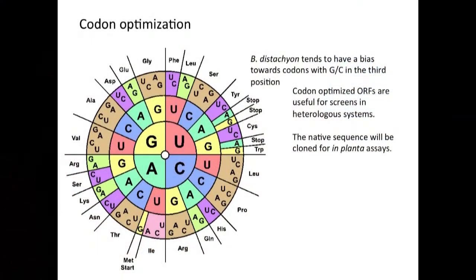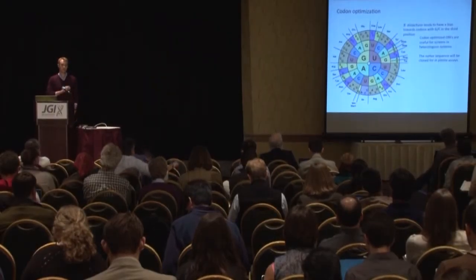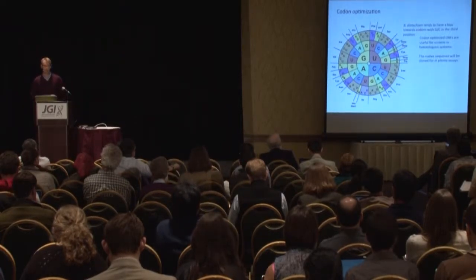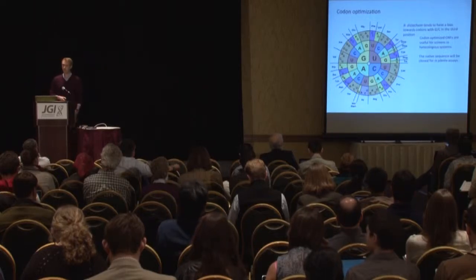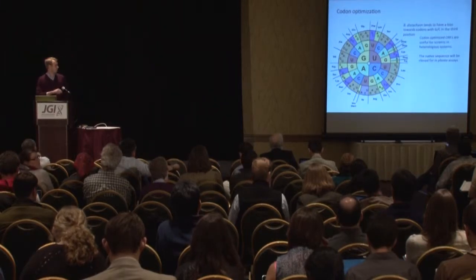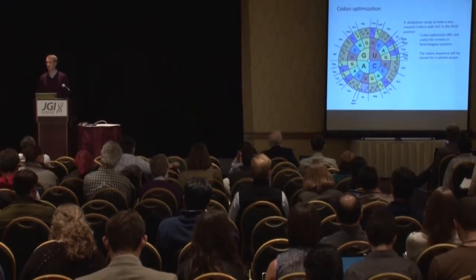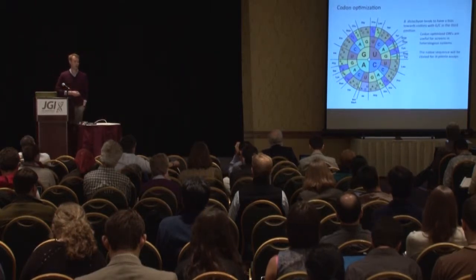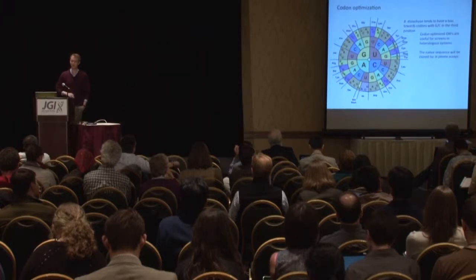As we heard about codon usage, synonymous codons make it possible to manipulate sequences to make them more amenable for synthesis. Brachypodium as a genome tends to have a bias towards codons ending in G's and C's. These synonymous codons are really useful for breaking up areas of an ORF that have sequence repeats or high GC content globally or locally. We've been working closely with Sam Deutch's group to determine when to use codon-optimized sequences — primarily for determining interactions in systems like yeast for protein and protein-DNA interactions, while for in-plant expression we'll likely want to clone out the native sequence.